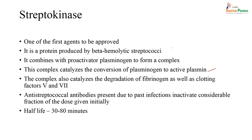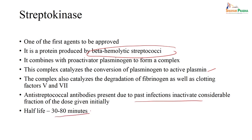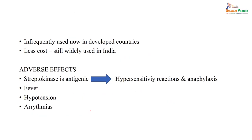The half-life of streptokinase is 30 to 80 minutes. Since it is produced by beta-hemolytic streptococci, there is also synthesis of streptococcal antibodies from past infection, which inactivates a considerable fraction of the dose given initially. This drug is infrequently used in developed countries, but in India it is still very widely used because it is affordable, has lower cost, and is equally efficacious.